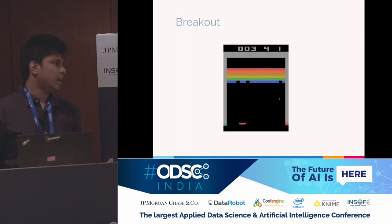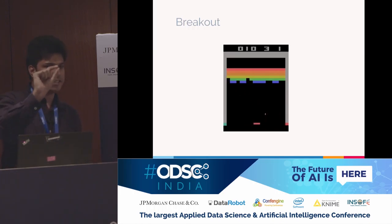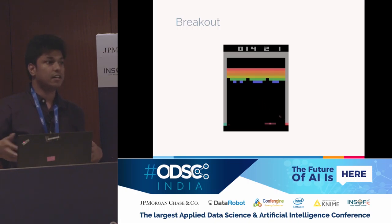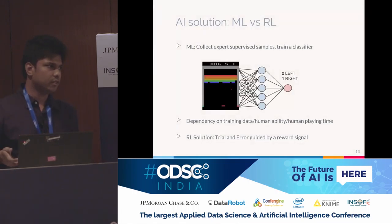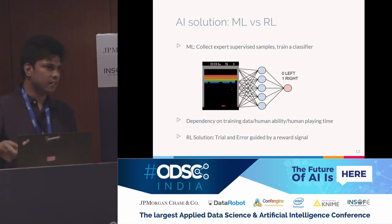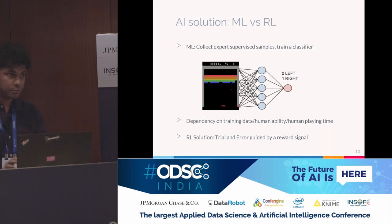Breakout — some of you might have played this. You control a paddle making it go left or right. Your goal is to not let the ball fall down, and whenever the ball hits a brick you get a positive score. How would you train a machine learning agent to play this? You'd have a human expert play the game, collect supervised samples — the game screen at a point in time and the action the human took — and train a neural network classifier to predict what to do given the situation. That's the machine learning approach.